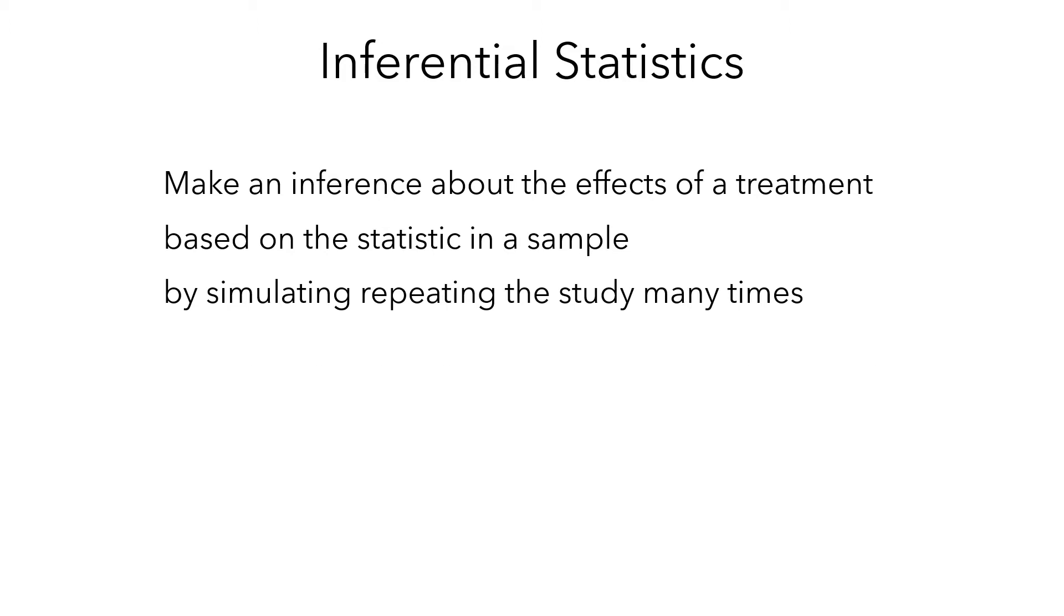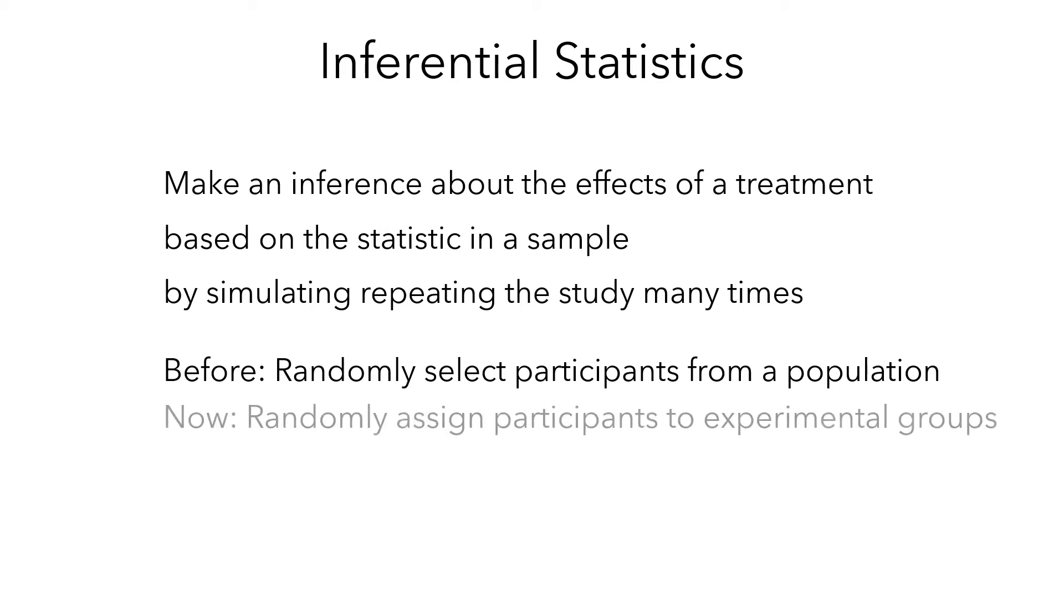Previous studies involved randomly selecting participants from a population using a variety of sampling methods. But in this new scenario, the participants aren't necessarily randomly selected from the population. Instead, the researchers randomly assigned the participants to experimental groups. So let's think about how to build a model for this.